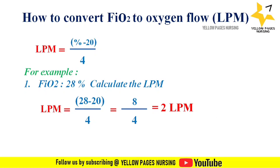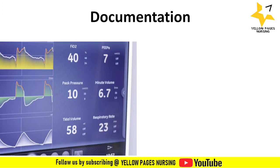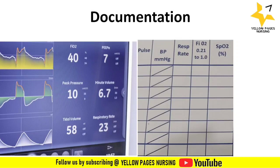The reason we chose this topic is to bring clarity on documenting FiO2 versus oxygen flow in liters per minute. This image shows the screen display of a patient on a ventilator where FiO2 is 40%, and the same is documented on the ICU chart as 0.40, which is easy for documentation.